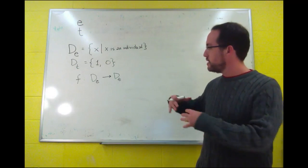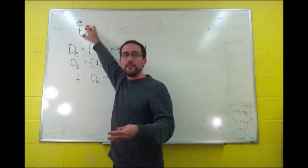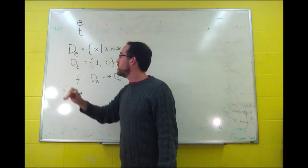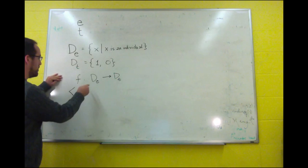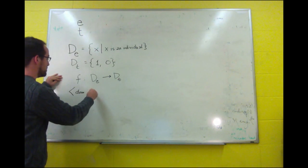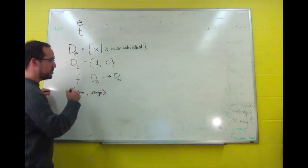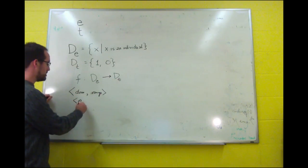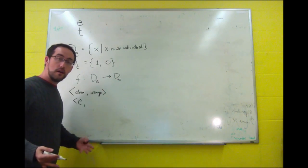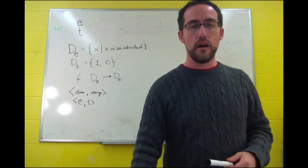We can characterize the function by its type as well. Individuals are of type E, they're entities. Truth values are of type T. But functions have types as well, and the types are essentially an ordered pair of the type of its domain and the type of its range. And that works out pretty well.